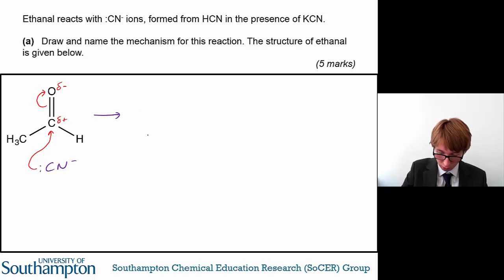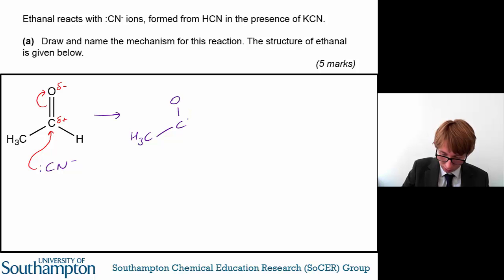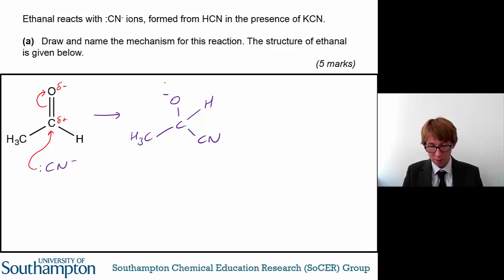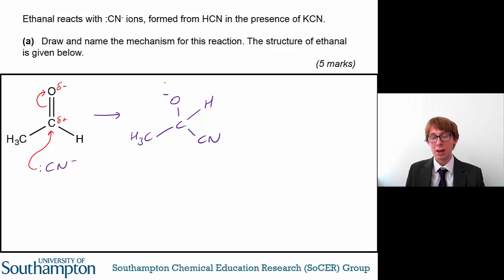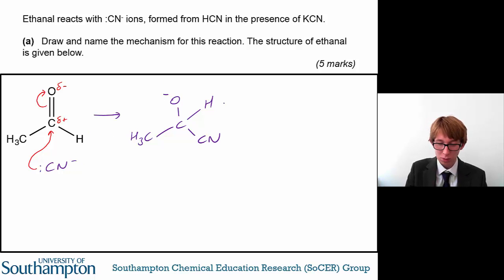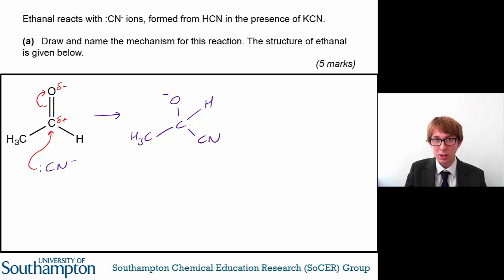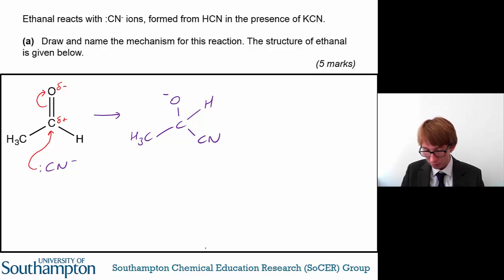From here, what you have formed is an intermediate. Remember, the charges on each side of the reaction equation must balance, so you've now got a negative charge on the oxygen, whereas you had it on the cyanide before. The reason the negative charge is on the oxygen is because the pair of electrons from the pi bond has now been delocalised onto it, so it's now negatively charged.